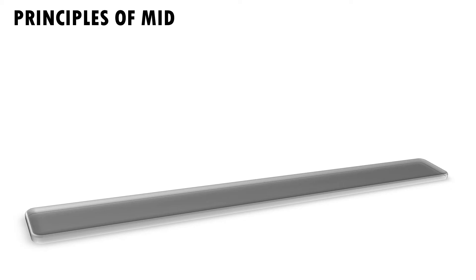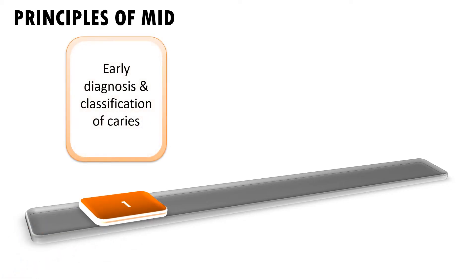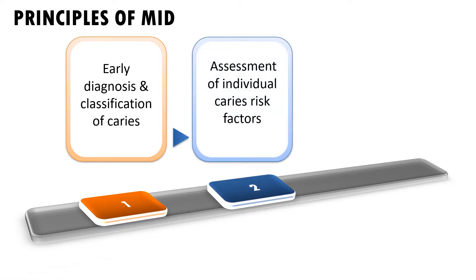The principles of MID — there are six. The first one is early diagnosis and classification of caries. At this stage, for diagnosis at the macroscopic level, visual and tactile methods along with radiographs are sufficient. But for detecting caries at microscopic levels, we need sophisticated tools like electronic caries detectors, DiagnoDent, and digital radiography.